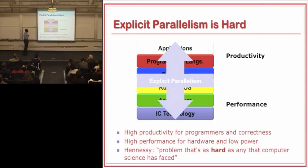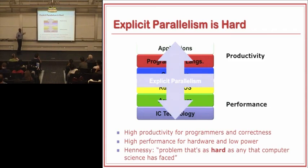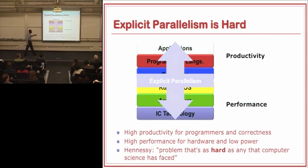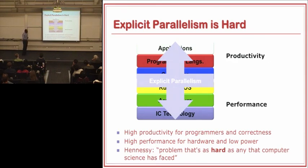One of the things that makes explicit parallelism so challenging is this tension between what you want at the upper levels of the stack and what you want at the lower levels. At the upper levels, you want high productivity for programmers — easy to write programs that are both correct and achieve good performance. At the bottom, you want high performance hardware. John Hennessey, president of Stanford, says that parallelism is a problem as hard as any computer science has ever faced, meaning lots of ingenuity is going to be required to make parallelism easy.